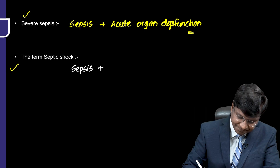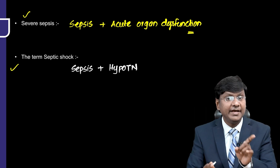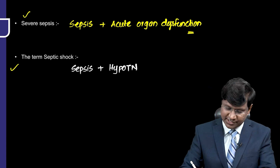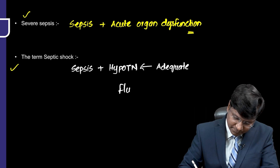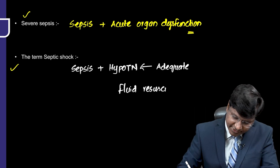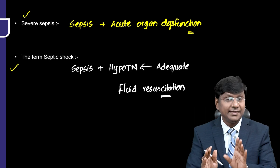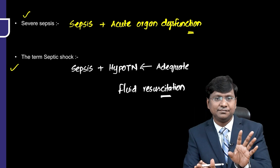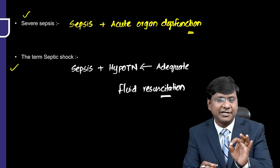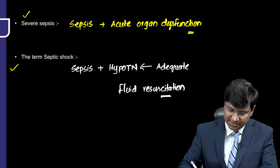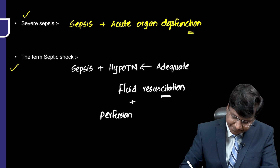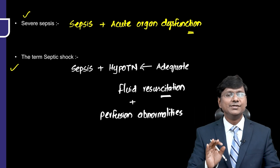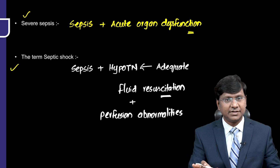Septic shock is the term for a subset of sepsis cases complicated by hypotension despite adequate fluid resuscitation — the patient's blood pressure will not improve. Along with hypotension, there will also be perfusion abnormalities in these patients.